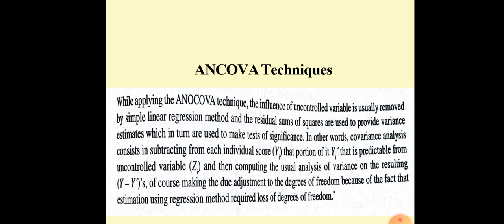In other words, covariance analysis consists in subtracting from each individual score Yi that portion of it Yi' that is predictable from uncontrolled variable Zi and then computing the usual analysis of variance on the resulting Y minus Y' of course making the due adjustment to the degree of freedom because estimation using regression method required loss of degree of freedom.